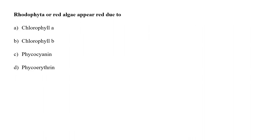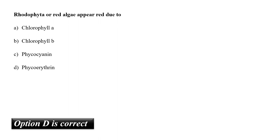Rhodophyta, or red algae, appear red due to A. Chlorophyll A, B. Chlorophyll B, C. Phycocyanin, or D. Phycoerythrin? Phycoerythrin is a red protein pigment complex from the family of phycobili proteins. It is primarily found in red algae and acts as an accessory pigment to the main chlorophyll pigments responsible for photosynthesis. These pigments impart red color to the Rhodophyta. So the correct answer is option D.